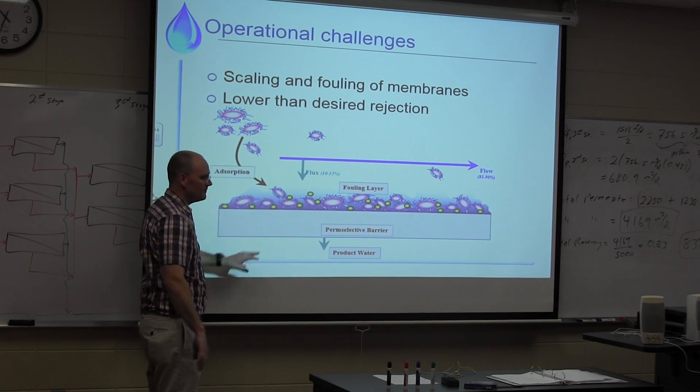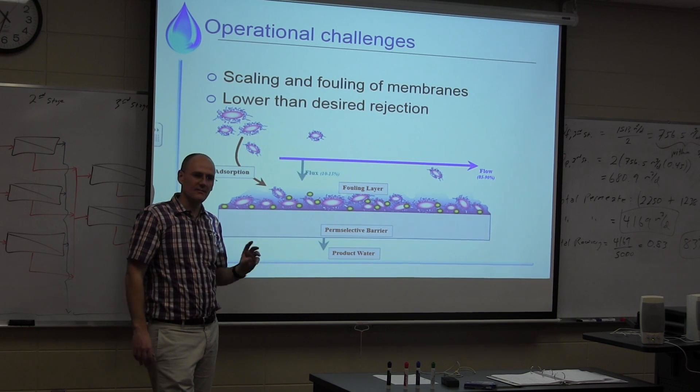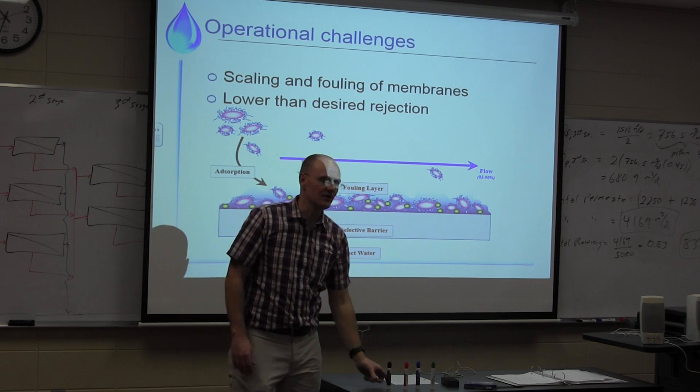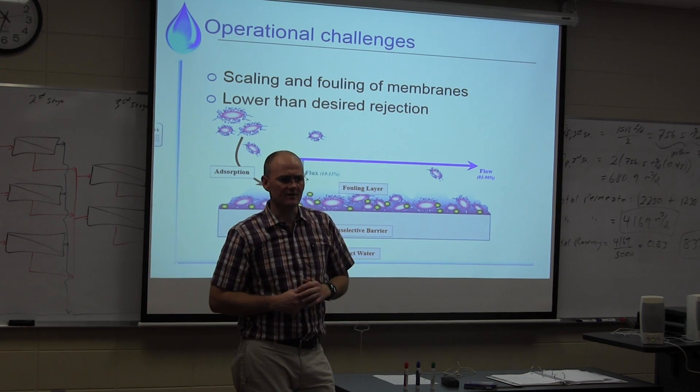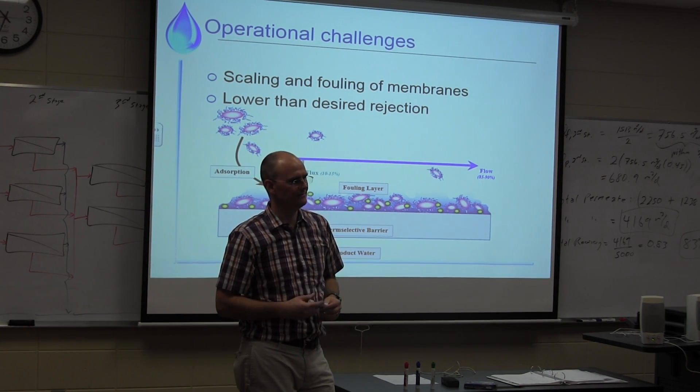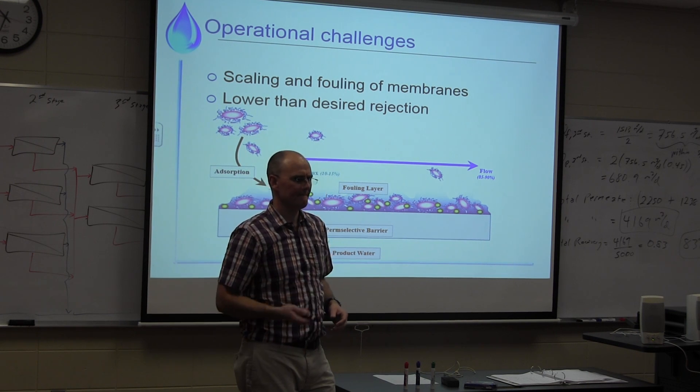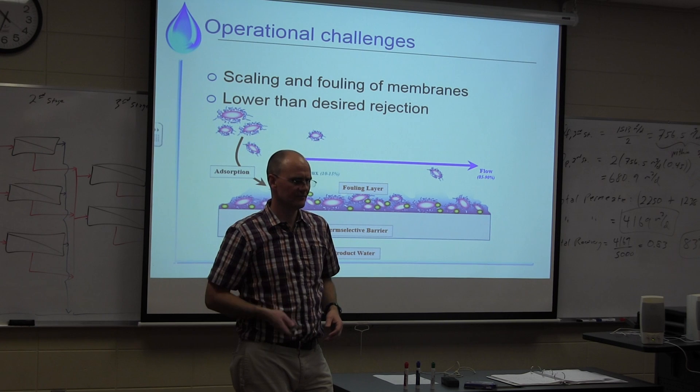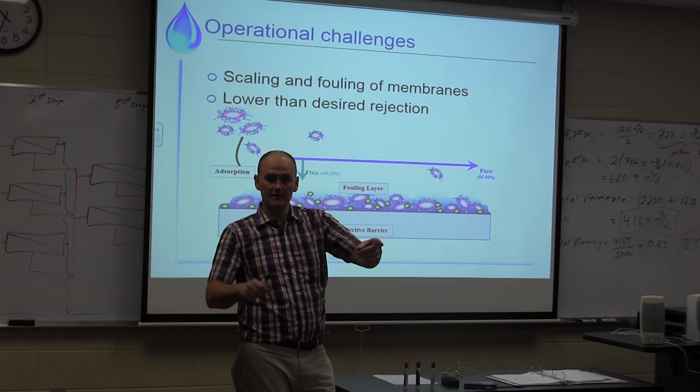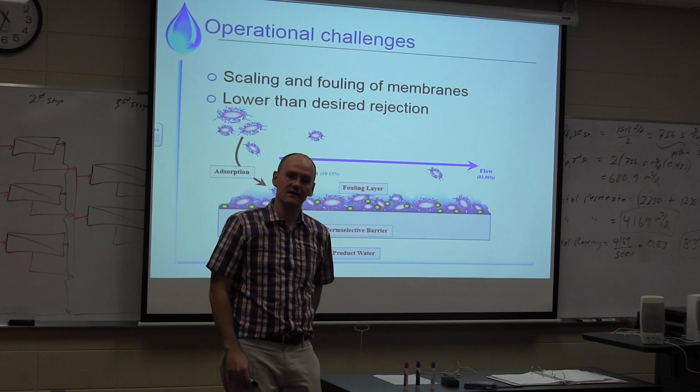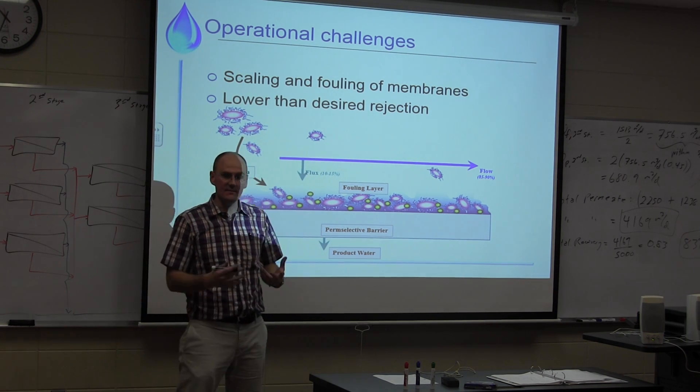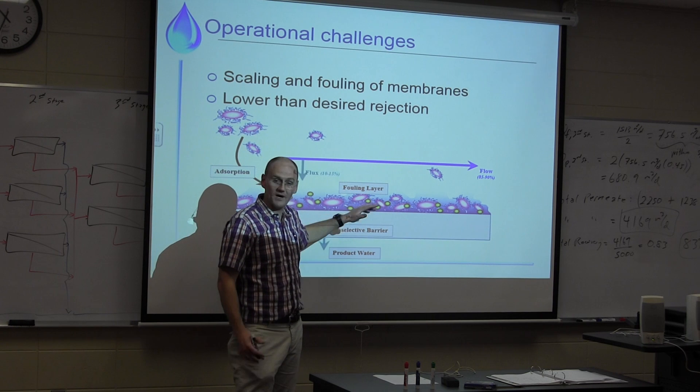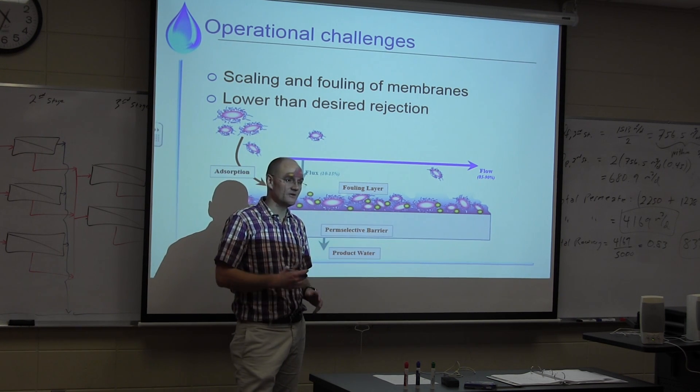You don't get this biofilm formation in microfiltration and ultrafiltration. Why do you think that is? Knowing what you know about MF and UF now, why don't you get a biofilm forming? How did we operate MF, UF? Dead end. The backwash. That's right. In MF and UF, we backwash it really regularly. And that kind of prevents a biofilm from forming because it's continually being backwashed.